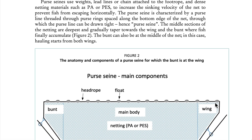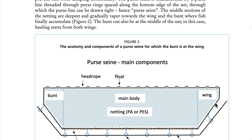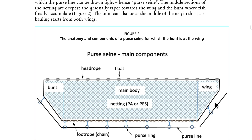Dense netting materials increase the sinking velocity of the net to prevent fish from escaping horizontally. The purse seine is characterized by a purse line threaded through purse rings spaced along the bottom edge of the net, through which the purse line can be drawn tight — hence 'purse seine.' The middle sections of the netting are deepest and gradually taper towards the wing and the bunt, where fish finally accumulate.